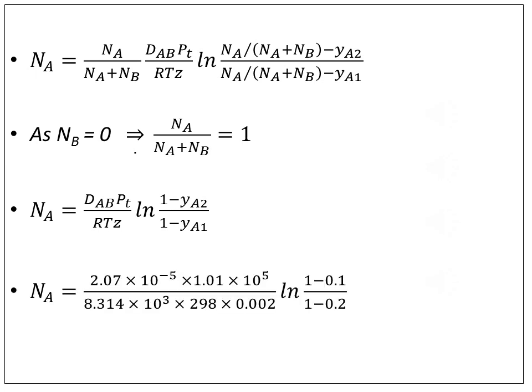Substituting all variable values into the equation, we get the flux of diffusion of oxygen as 4.97×10^-5 kmol/(m²·s).